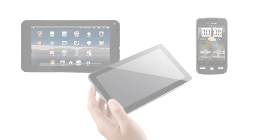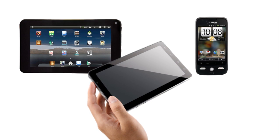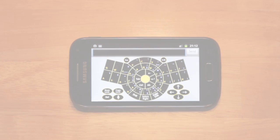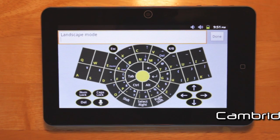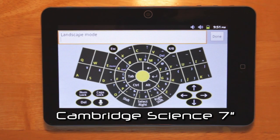The keyboard app is best suited for use on tablet devices and smartphones with larger screens. The tutorial shows the app running on a Samsung Galaxy Ace 2 smartphone and a Cambridge Science 7 inch tablet device.